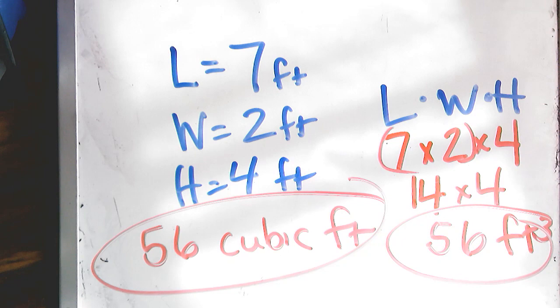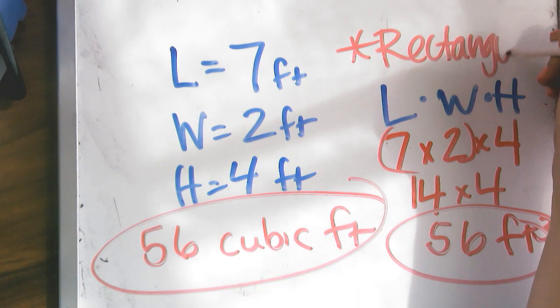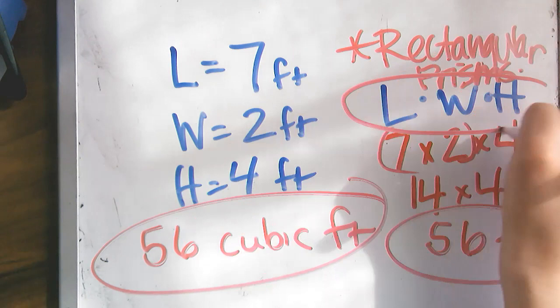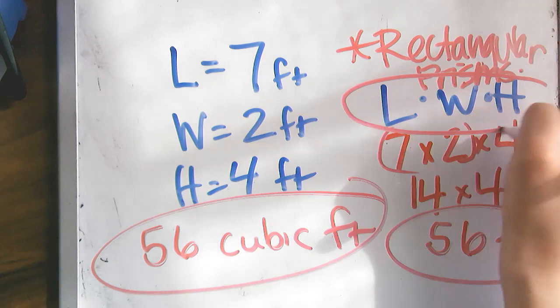And this would be feet cubed or 56 cubic feet. Both would be correct answers. So again, the big thing is these can only be applied to rectangular prisms. Say it with me: Rectangular prisms can use length times width times height. Rectangular prisms can use length times width times height. All right, perfect. So today you're just going to be applying this formula to perfect your volume skills. Good luck and I look forward to seeing your work.